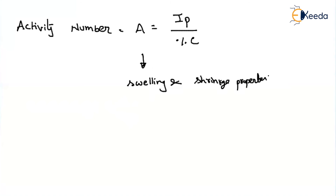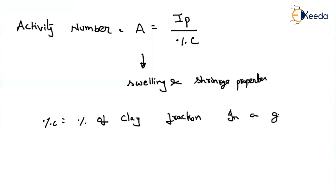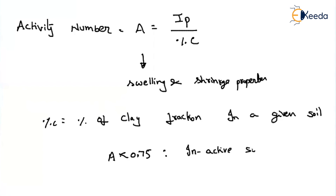We have to make sure that this activity number will be a lesser value such that there will not be much change in the swelling and shrinkage. IP is the plasticity index, and percentage of C is nothing but the percentage of clay fraction in a given soil. We have to find out what is the percentage of clay fraction and substitute it. If you substitute IP in percentage, this percentage also must be in percentage; if in decimal, both in decimal. If the activity number is less than 0.75, the soil is inactive — there will not be any swelling and shrinkage properties. If the activity number is 0.75 to 1.25, then it is a normal active soil.